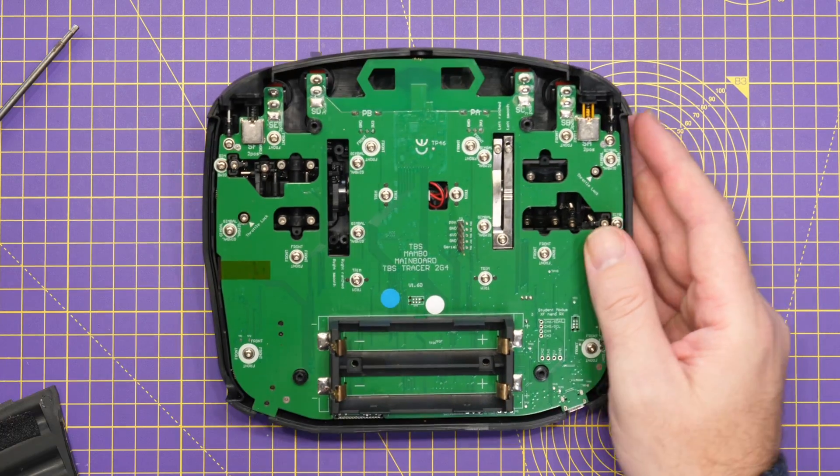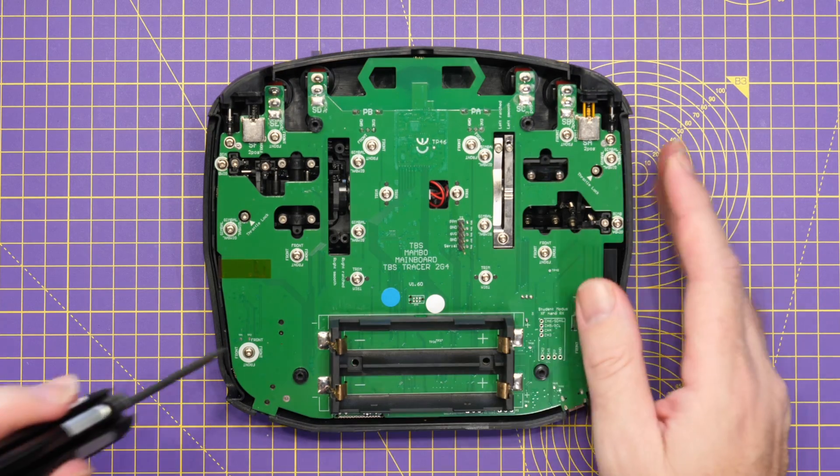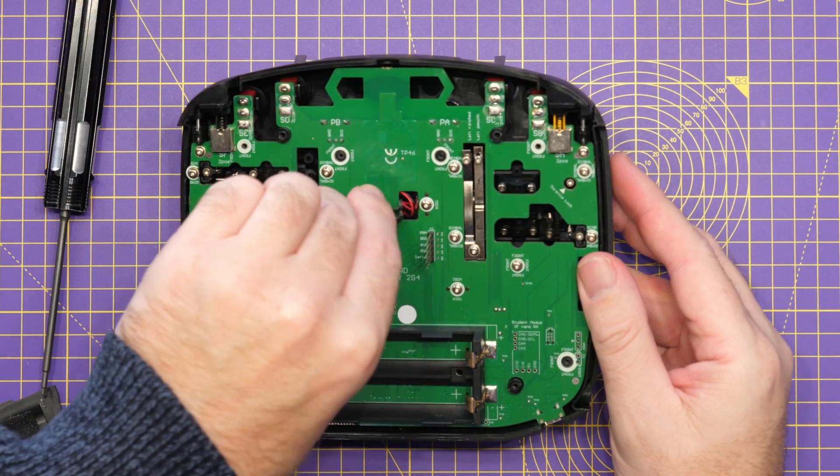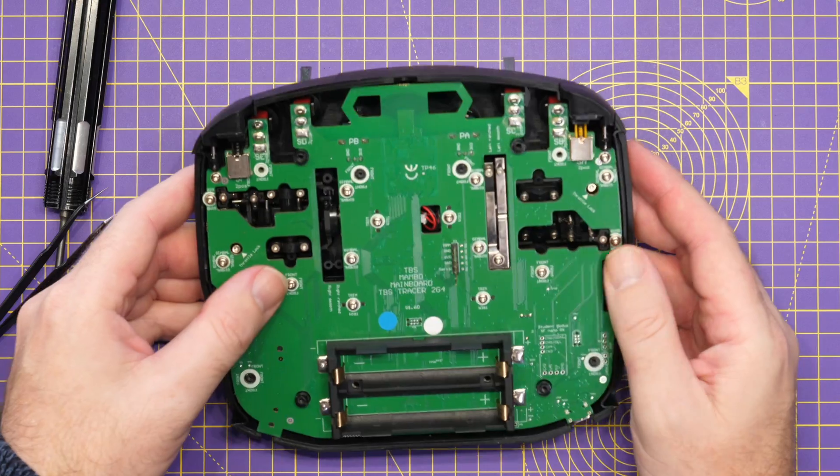So what we'll do first of all is remove the ones that are labeled front. Right I think that's all of the ones labeled front. We're then just going to pull that little connector out because I have a feeling that gets in the way.